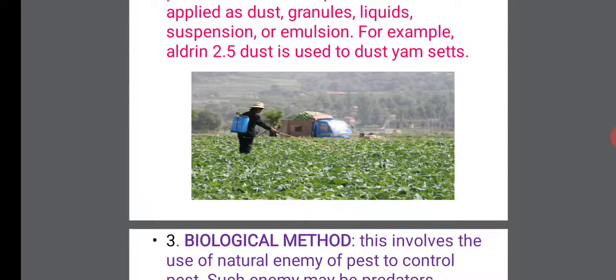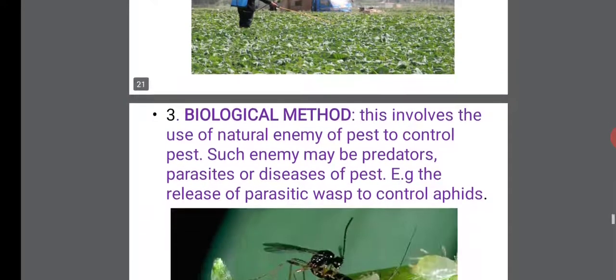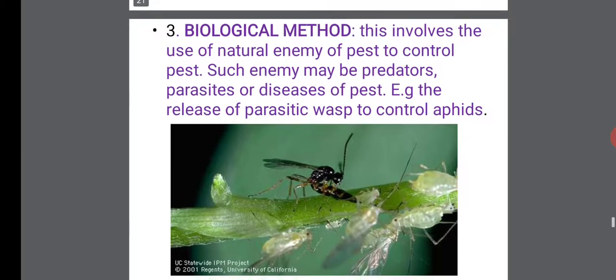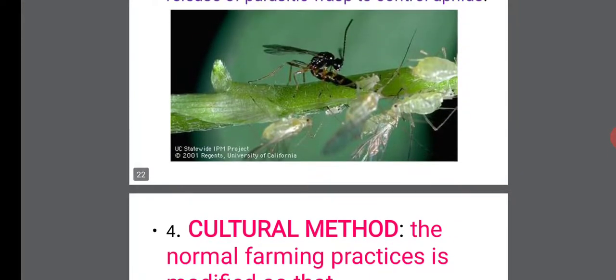You can see somebody spraying pesticides on crops to kill pests. The third method is the biological method. This involves the use of natural enemies of pests to control them. Such enemies may be predators, parasites, or diseases of pests. For example, you can use cats to clear mice from a farmland. Another example is the release of parasitic wasps to control pests, as you can see in the picture.